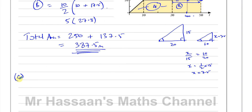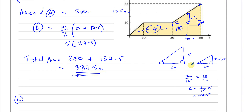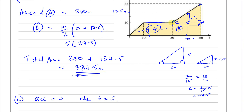Part c asks for the acceleration when t = 15. At t = 15, we're in the flat section of the graph where the speed is constant at 10 meters per second. The gradient of a speed-time graph gives acceleration, and since the gradient is zero in this section, the acceleration is equal to zero.